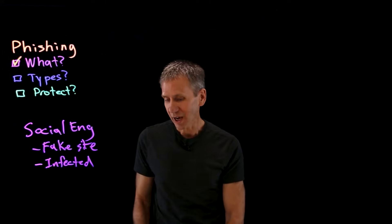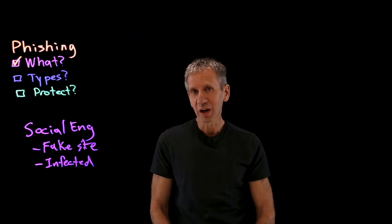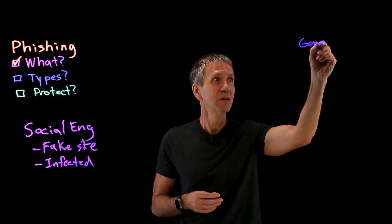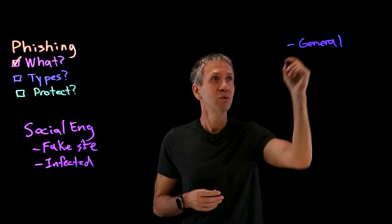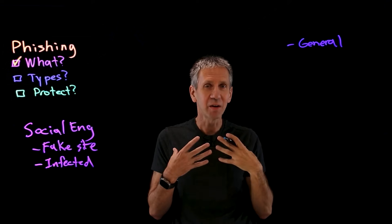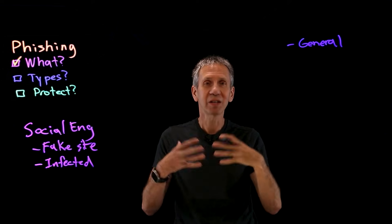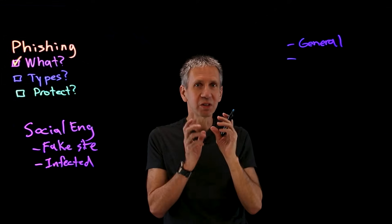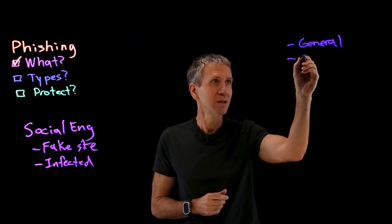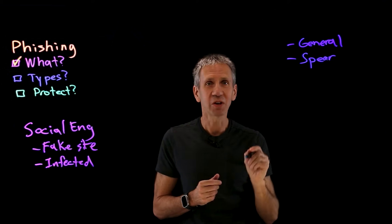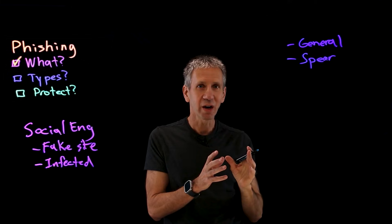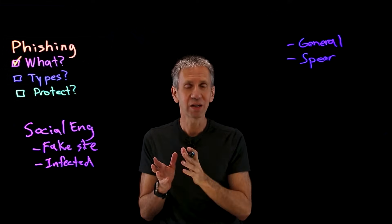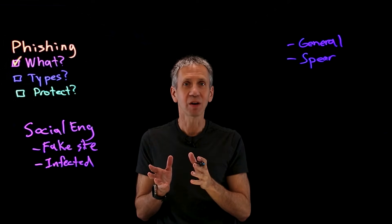There are different types of phishing attacks. First, there's the general phishing attack, which is pretty indiscriminate — the attacker sends it out to anybody and sees who responds. Then there's a more specific type called spear phishing. In a spear phishing attack, the message is specially crafted to make sense to you. The more specific it is to you and your environment, the more likely you are to click on it.